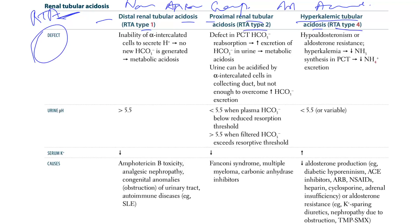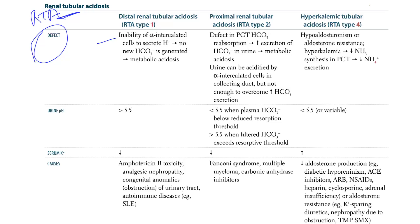For RTA type 1, the defect is the inability of alpha intercalated cells to secrete hydrogen, leading to no new bicarb being generated, leading to metabolic acidosis.